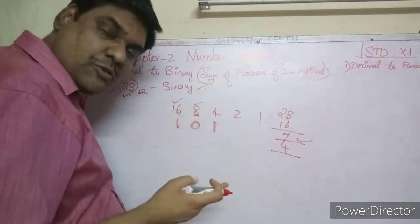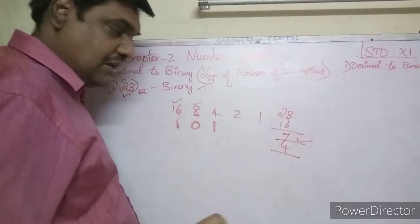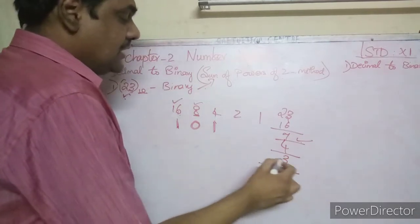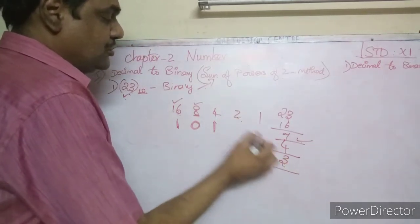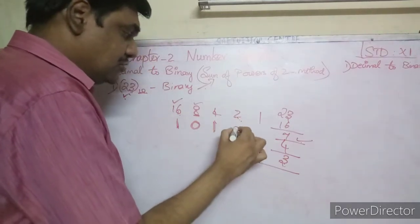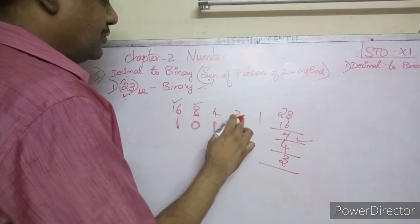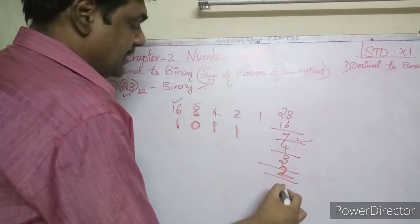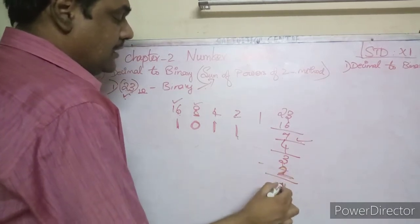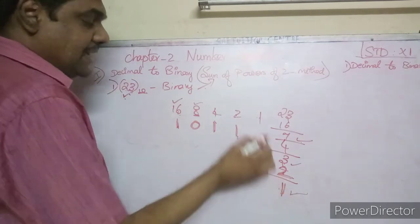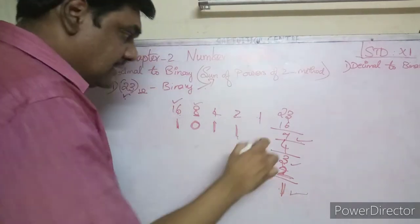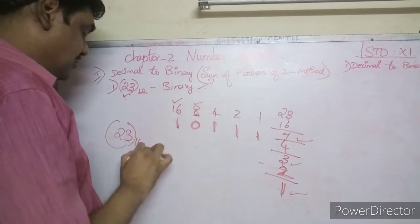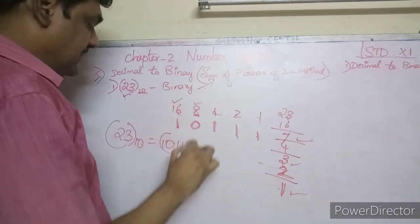Now compare 3 with 2. Since 3 is greater than 2, put a 1 and subtract 2 from 3, giving 1. Compare 1 with 1 — they are equal, so put a 1. So 23 base 10 is equal to 10111 base 2.